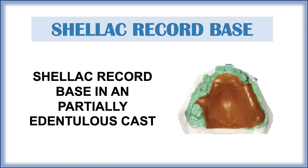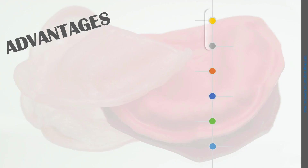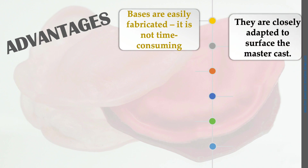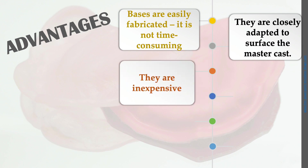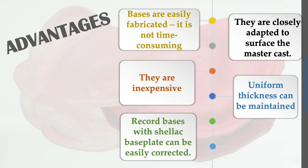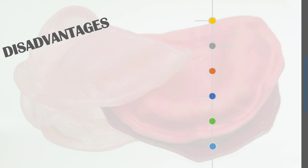Advantages of shellac record base: they are easily fabricated and not time consuming — you simply heat the shellac plate and adapt it on the cast. They closely adapt to the surface of the master cast, are inexpensive, and uniform thickness can be easily maintained with thumb pressure. Errors can be easily corrected by reheating the base plate.